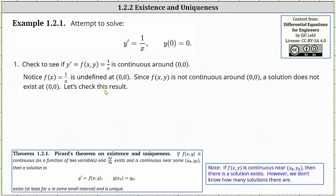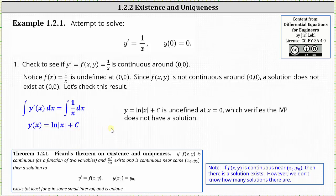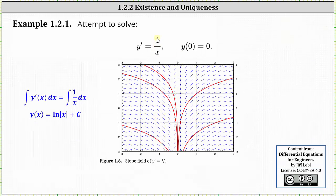Let's verify by actually solving the initial value problem. To solve y prime equals one divided by x, we integrate both sides with respect to x, which gives us y of x equals the natural log of the absolute value of x plus c. Looking at the general solution, y equals natural log of the absolute value of x plus c is undefined at x equals zero because natural log of zero is undefined, which confirms the initial value problem does not have a solution with the given initial condition. The slope field for y prime equals one divided by x shows several particular solutions, none of which pass through x equals zero.